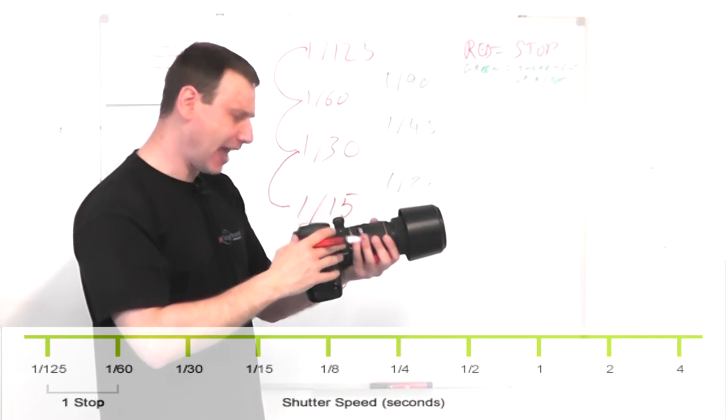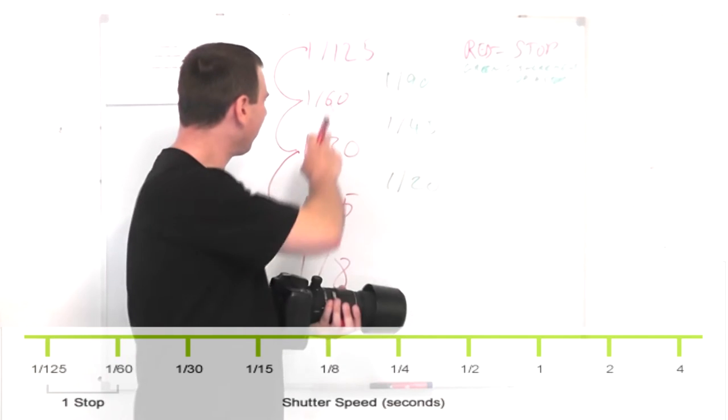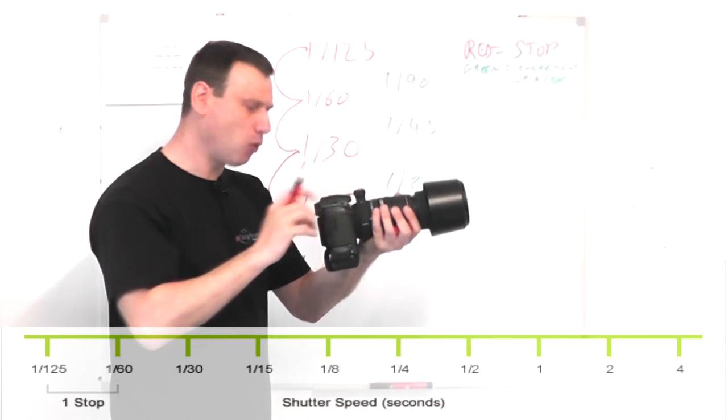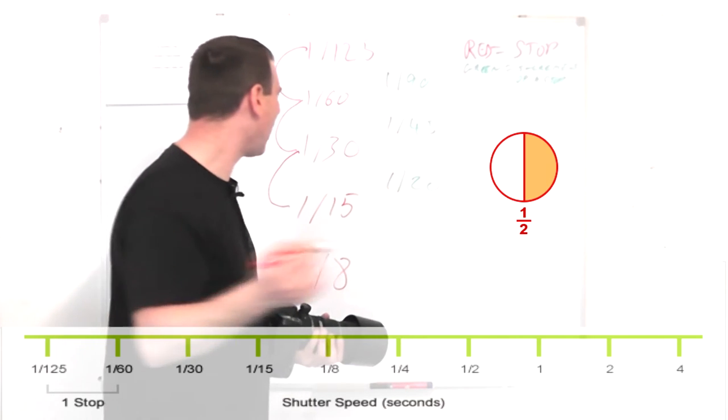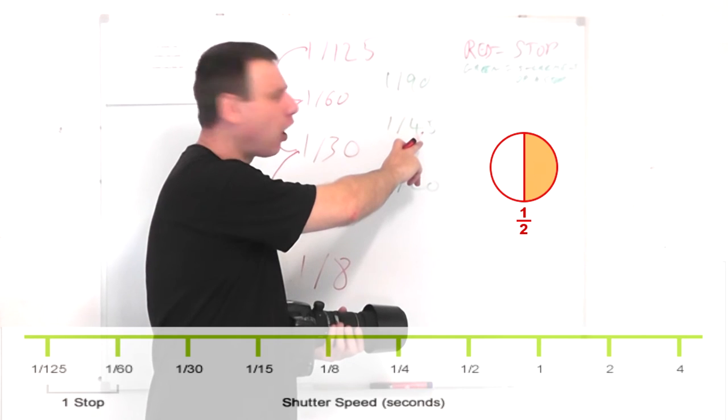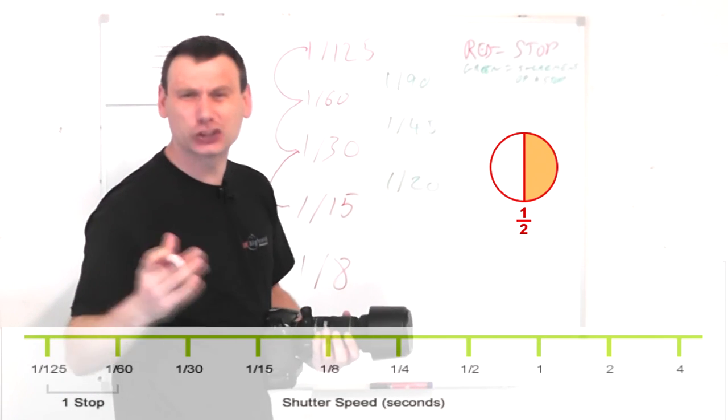So if I move again, now I'm on 1/60th of a second. But if I go from 1/60th of a second, move my wheel dial, I'll get 1/45th of a second. But again that is not a full stop. Instead that is half a stop.